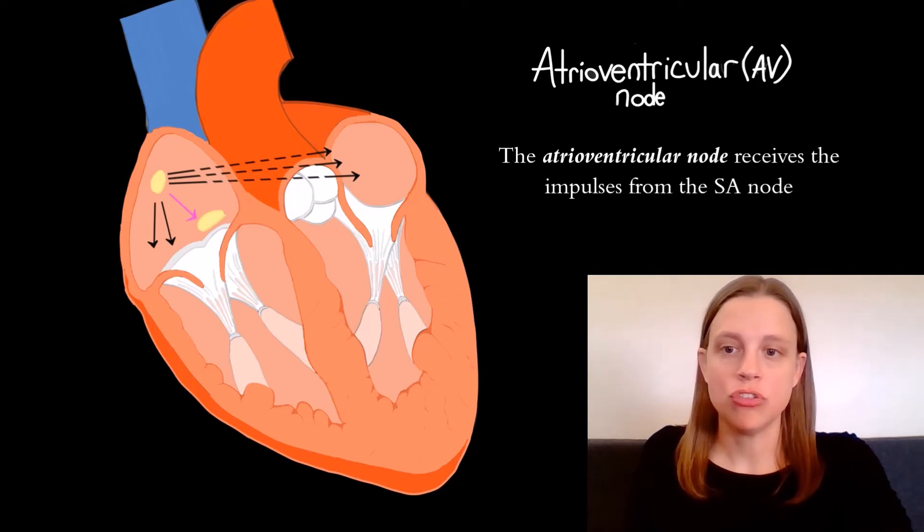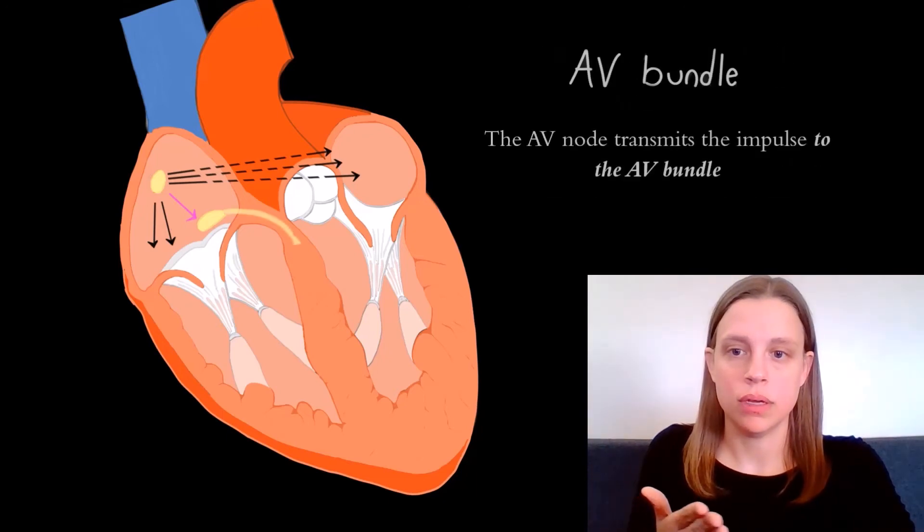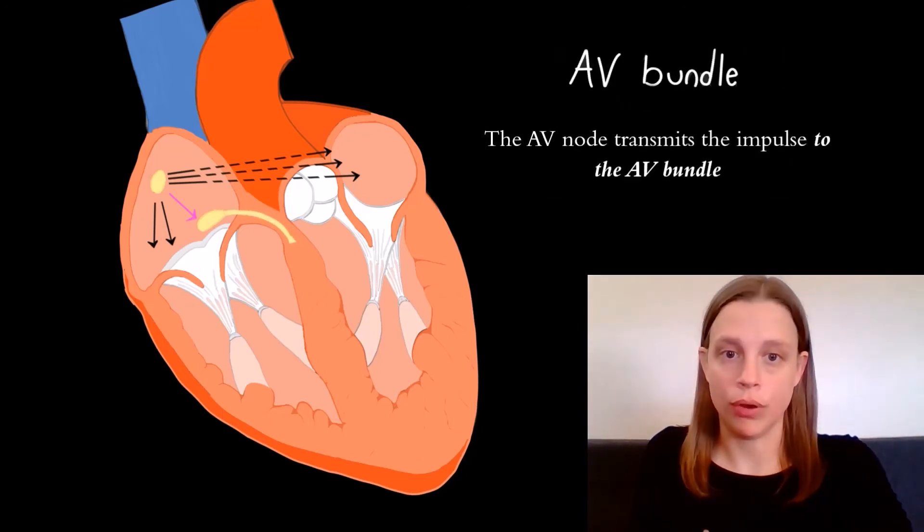The atrioventricular node allows the impulse to pass into the ventricles. The AV node leads into the AV bundle,